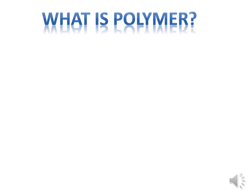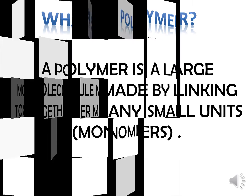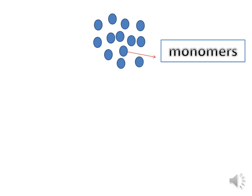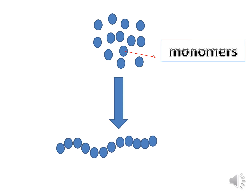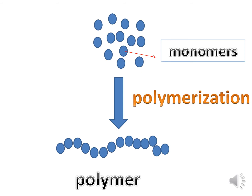What is a polymer? A polymer is a large molecule made by linking together many small units called monomers. Each small molecule is called a monomer. These monomers are joined in a chain-like structure called a polymer. The process of converting monomers into a polymer is known as polymerization.